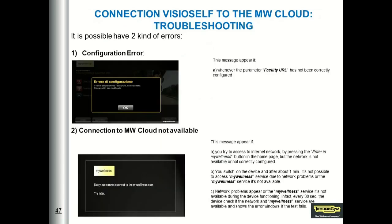What can go wrong with the VisioSelf? For example, if the facility URL we insert is not available — for instance, if we spell the name wrongly — the VisioSelf checks with the service whether there is a facility URL corresponding to the name, and if it cannot find any, it will return an error message. In this case, we have to correct the facility URL. The other type of error shown here occurs when the VisioSelf cannot connect to the internet and so cannot reach the facility we have entered.